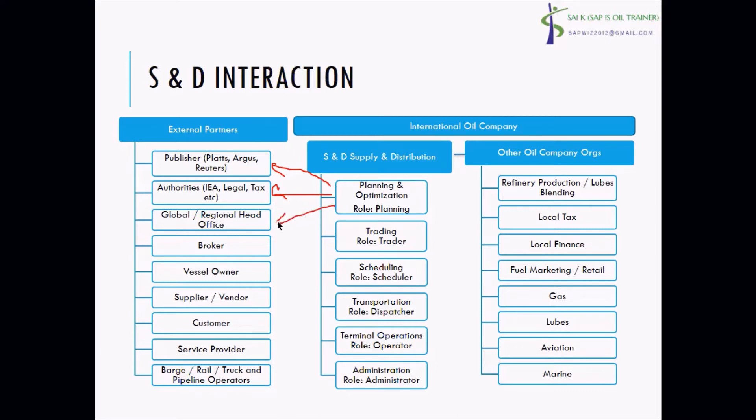Similarly, they get inputs from the global regional head office in order to plan. How much is the capacity? How much optimization do they want to achieve? What kind of products do they want to blend to get the right value? They cannot take this on their own; they cannot decide on their own. They need the information from the refinery production team and the fuel marketing team.